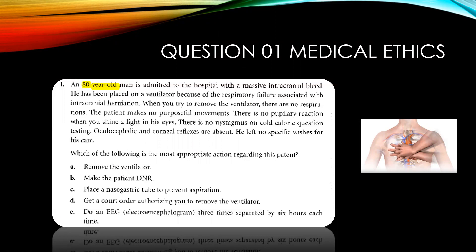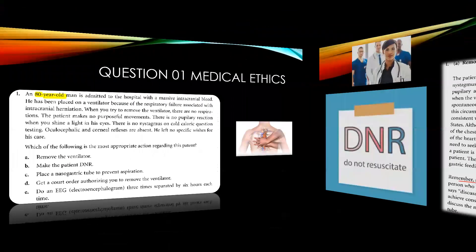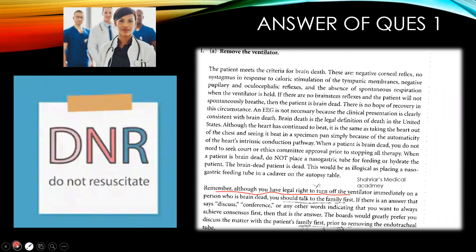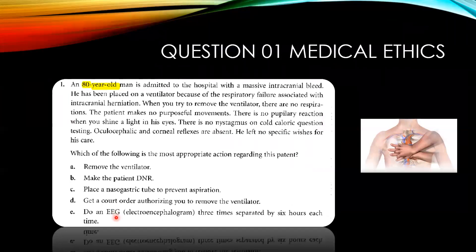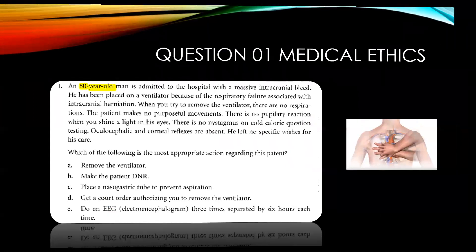10 seconds is up. The answer is: remove the ventilator. There is no DNR form for this patient that we know about, and this isn't really a direct question about DNR — I brought that up so you'd know about it. Since nothing is written and the patient is clinically dead, you can't do anything further. This patient meets the criteria for brain death: no reflexes, no nystagmus on caloric testing, corneal reflex absent — there is no hope of recovery. The EEG is used for other purposes like seizures and is not a useful test at this point.